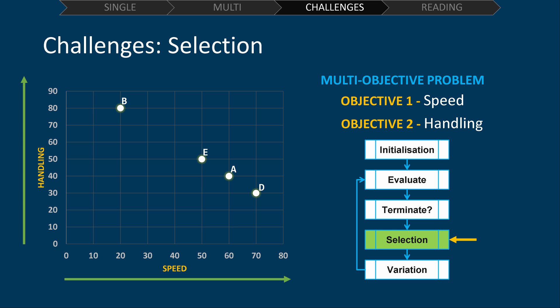This makes the selection stage of any optimization process very challenging. Because, at this point, we need to select some solutions which we feel are the best to move on to the next stage of the process.